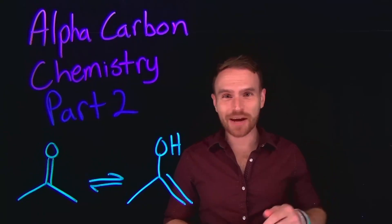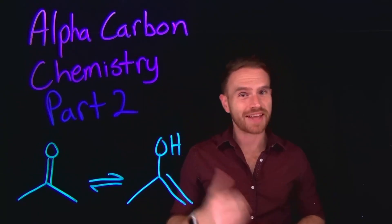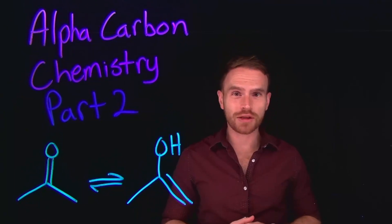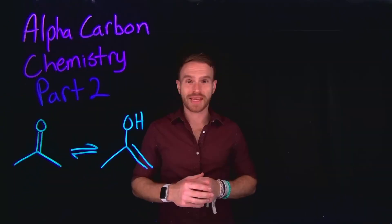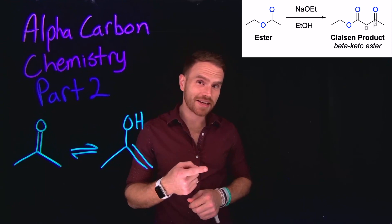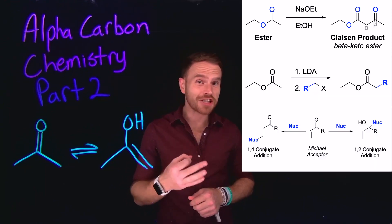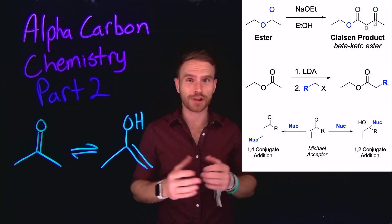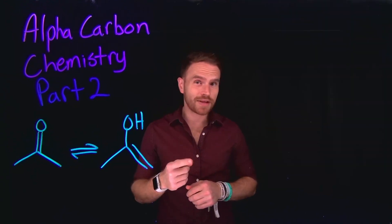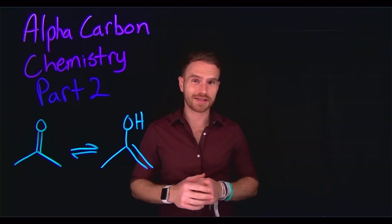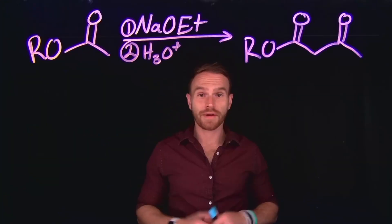Welcome back. Today we're going to be talking about part two of alpha carbon chemistry. In the last video, we looked at enols and enolates, so if you missed it, go check it out. In today's video, we'll be exploring Claisen condensations, alkylation at the alpha position, and conjugate additions, which are also known as Michael additions. These topics are essential for understanding reactivity and organic synthesis, and stick around to the end because I have some practice problems that should help for your next exam.